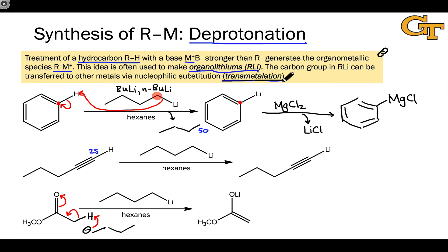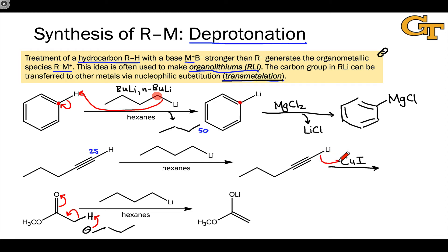Transmetallation works great as long as the organometallic compound we're generating is less reactive and less nucleophilic at carbon than the one we start with — and almost anything is less reactive than the corresponding organolithium compound. For example, we could transmetallate an alkynyl lithium to copper using copper iodide. The mechanism is nucleophilic substitution: the organolithium donates a pair of electrons at its nucleophilic carbon to copper, and the copper-iodine bond breaks toward iodine, kicking it off as a leaving group. This generates the alkynyl copper species and lithium iodide.